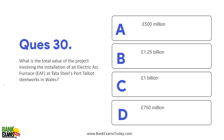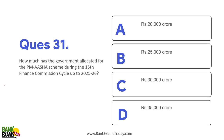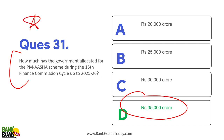What is the total value of the project involving the installation of an Electric Arc Furnace at Tata Steel's Port Talbot Steelworks in Wales? It is 1.25 billion. How much has the government allocated for the PM Asha scheme? It has been allocated 35,000 crore rupees — that is important.